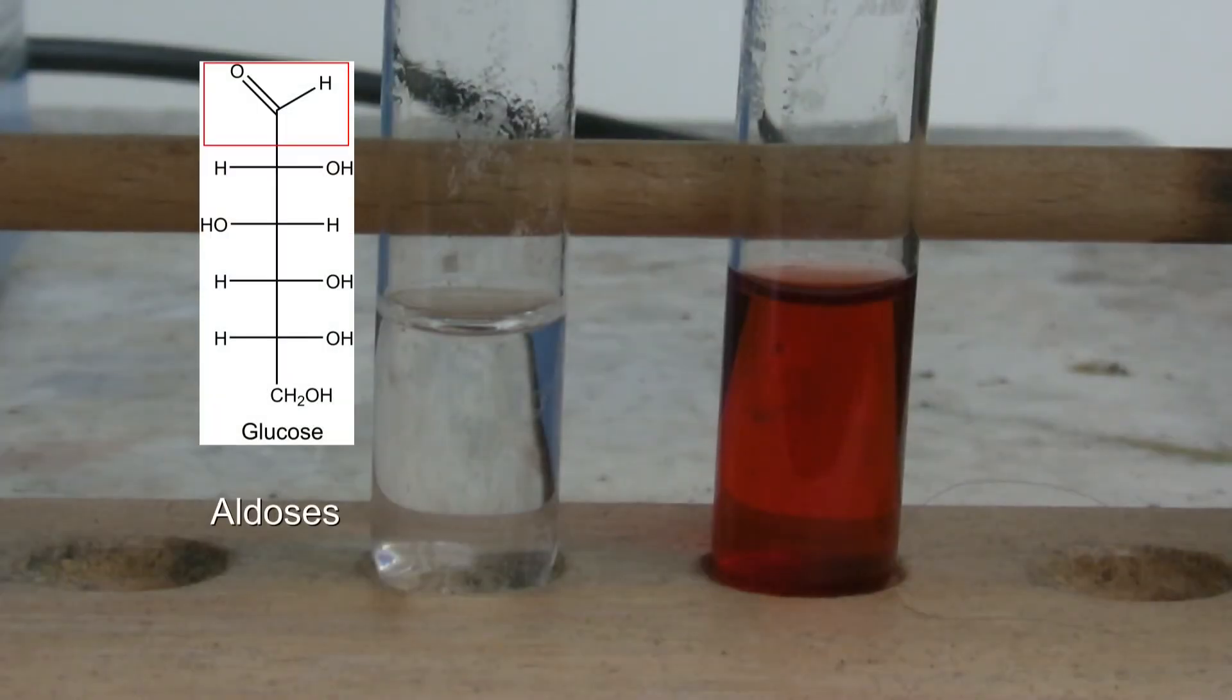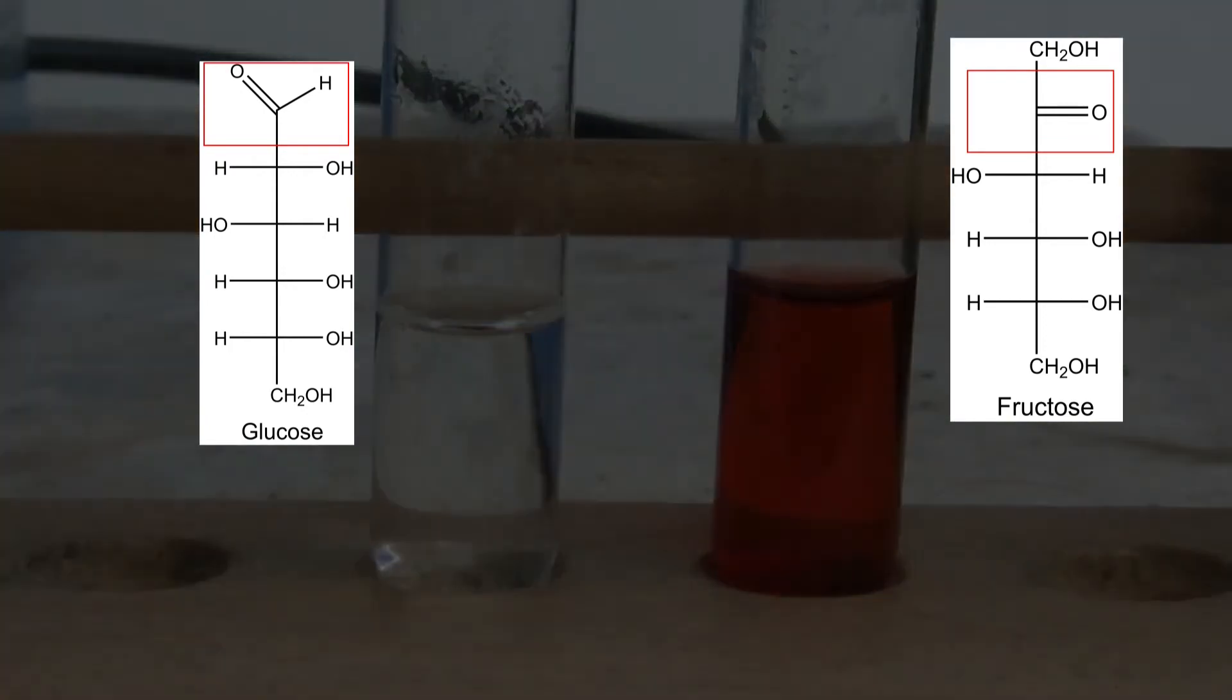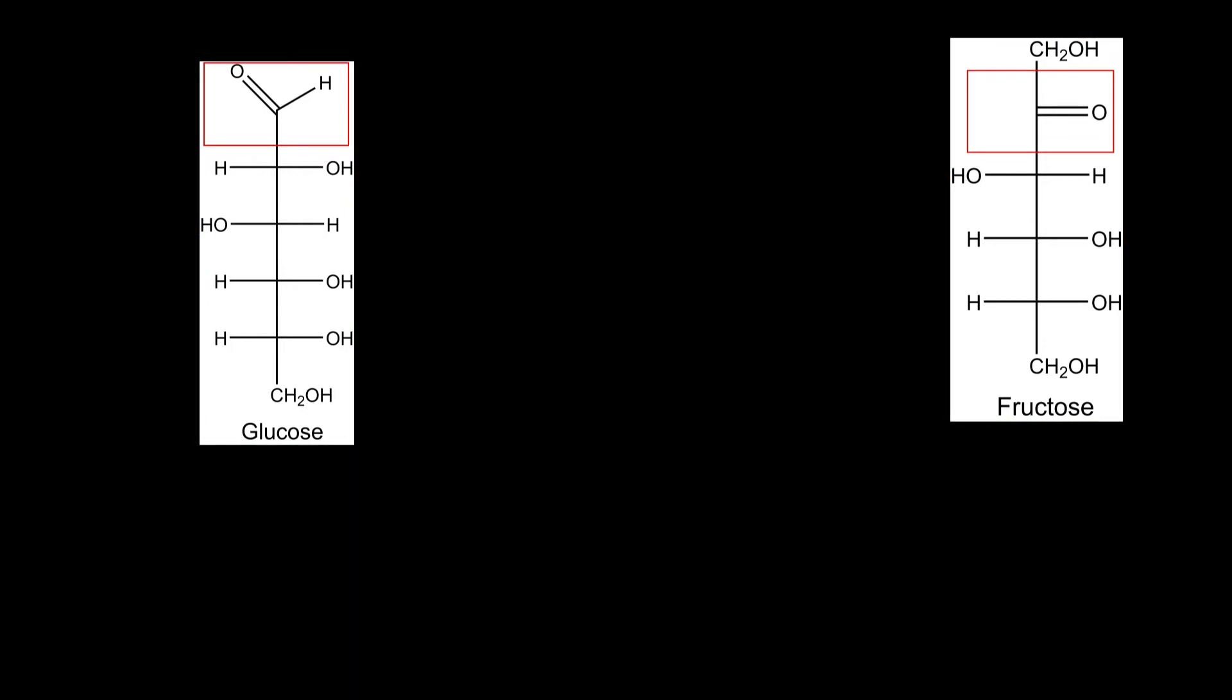Monosaccharides are divided into aldoses and ketoses, so these have an aldehyde or keto group which can be differentiated with Selivanov's test. Usually the monosaccharides are present in the cyclic form but are preferably drawn in the Fischer projection as shown here.